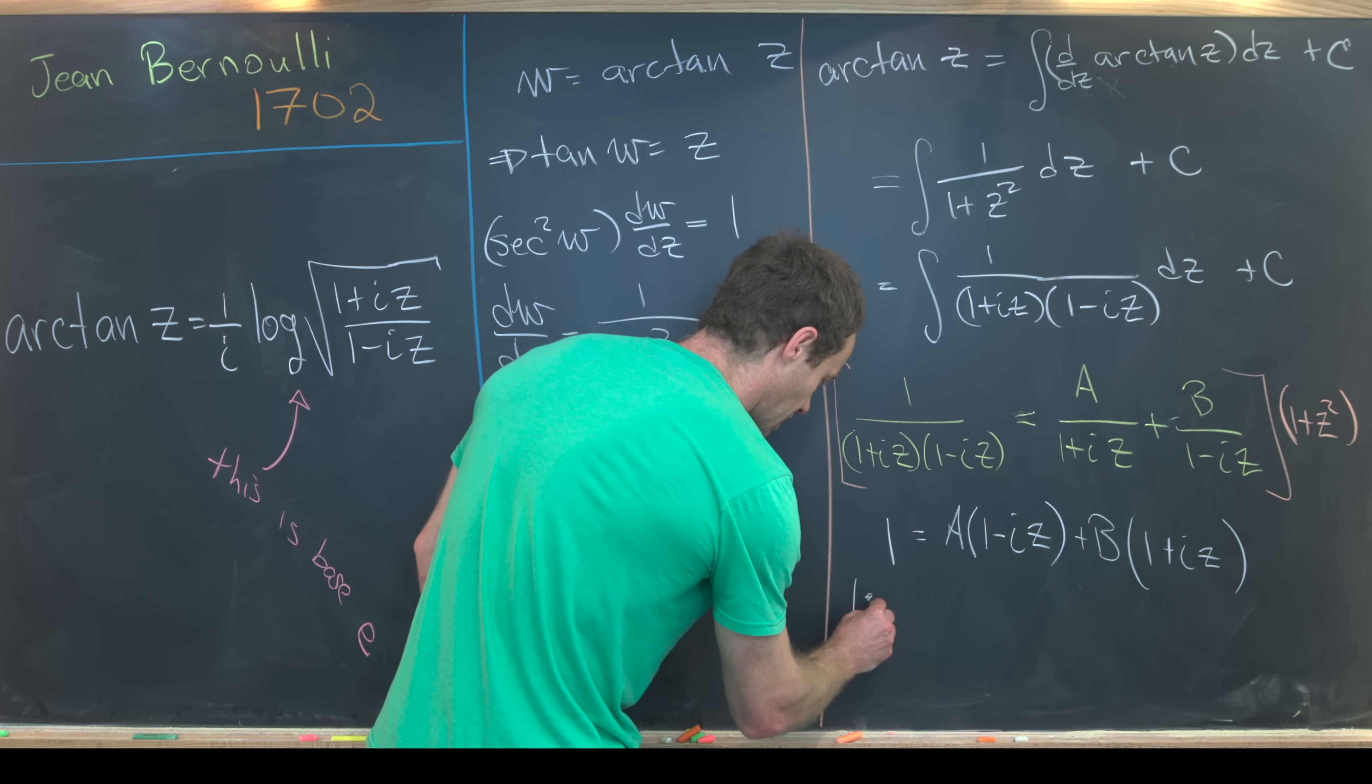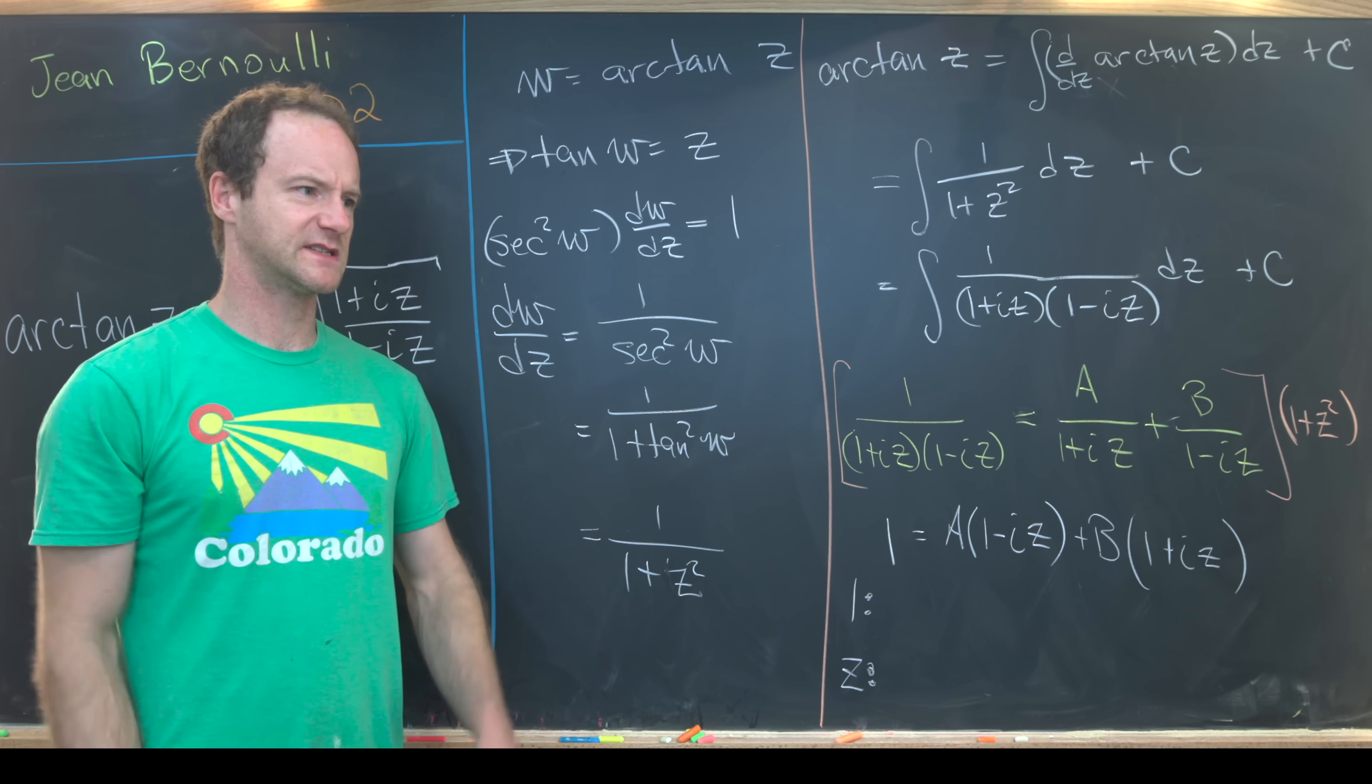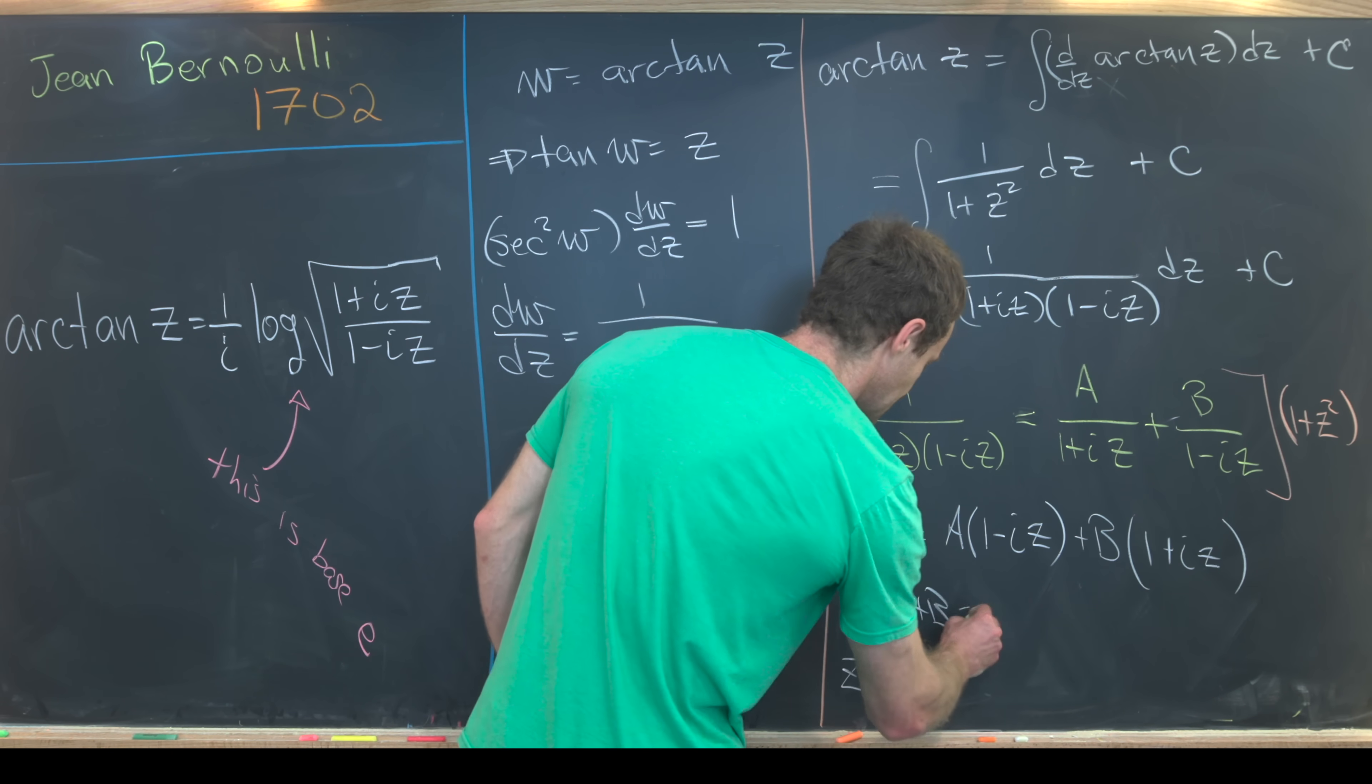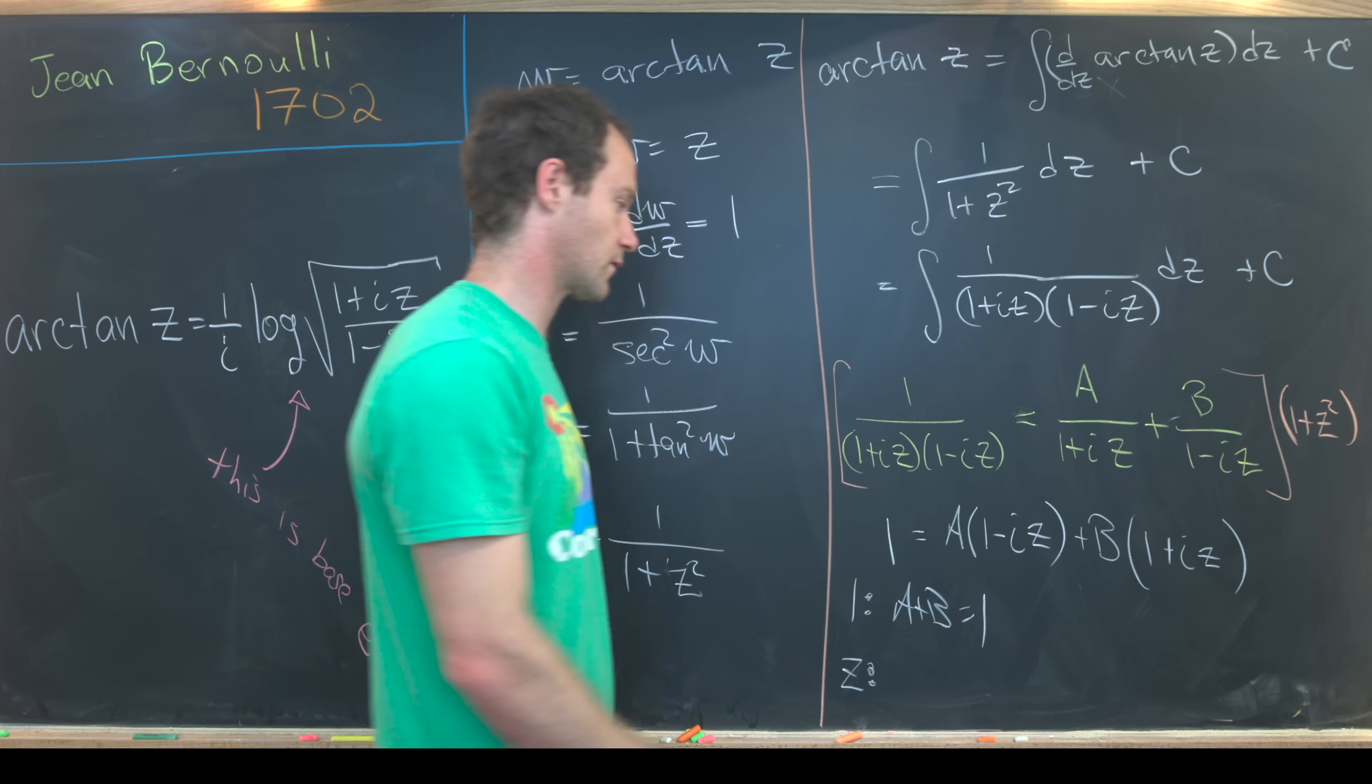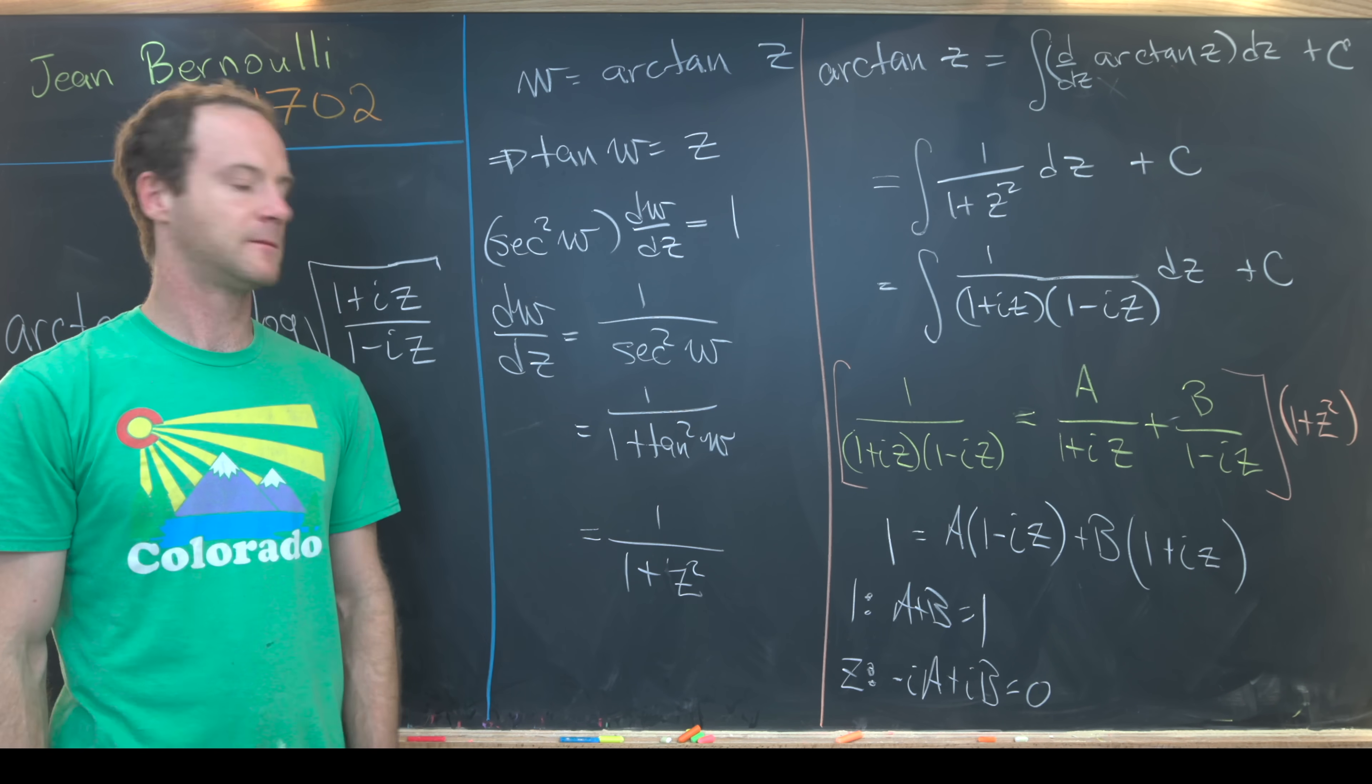We can extract our constant terms and our z terms, keeping in mind that constants and first powers of z form a basis for linear type polynomials. The constants on the right-hand side are a plus b. Constants on the left-hand side is one. Then the coefficients of z on the right-hand side is minus i times a plus i times b, and it's zero on the left-hand side.